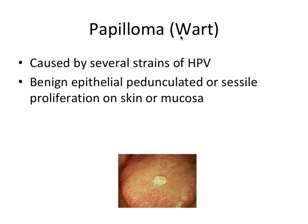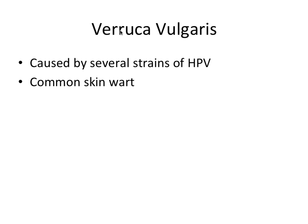Next we have papilloma, more commonly referred to as a wart. This papilloma is on the dorsum of the tongue, and you can see the warty, bumpy appearance, which is very pathognomonic of an HPV infection. Papillomas can be caused by several different strains of HPV. It's a benign epithelial lesion — either pedunculated, meaning ballooning out, or sessile, meaning more of a mound-shaped or dome-shaped lesion — representing a proliferation on skin or mucosa.